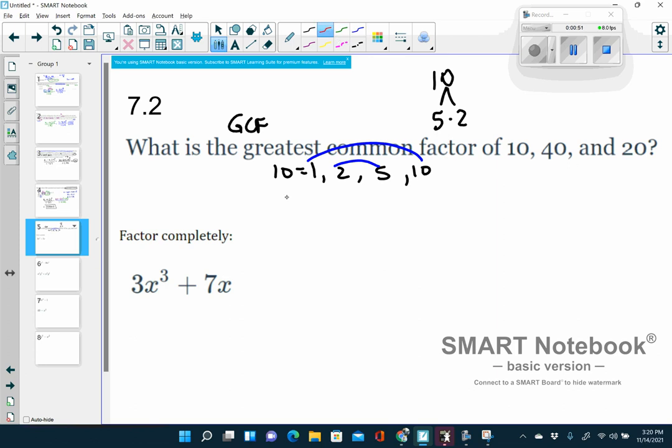The factors of 40, if I break that down, are 1, somewhere over here I'm going to put 40, 2 times 20. Do you see what I'm doing? That'll help me get all of them. 3 doesn't go into 40, but 4 does. 4 times 10 is 40. Almost done. 5 times 8 is 40.